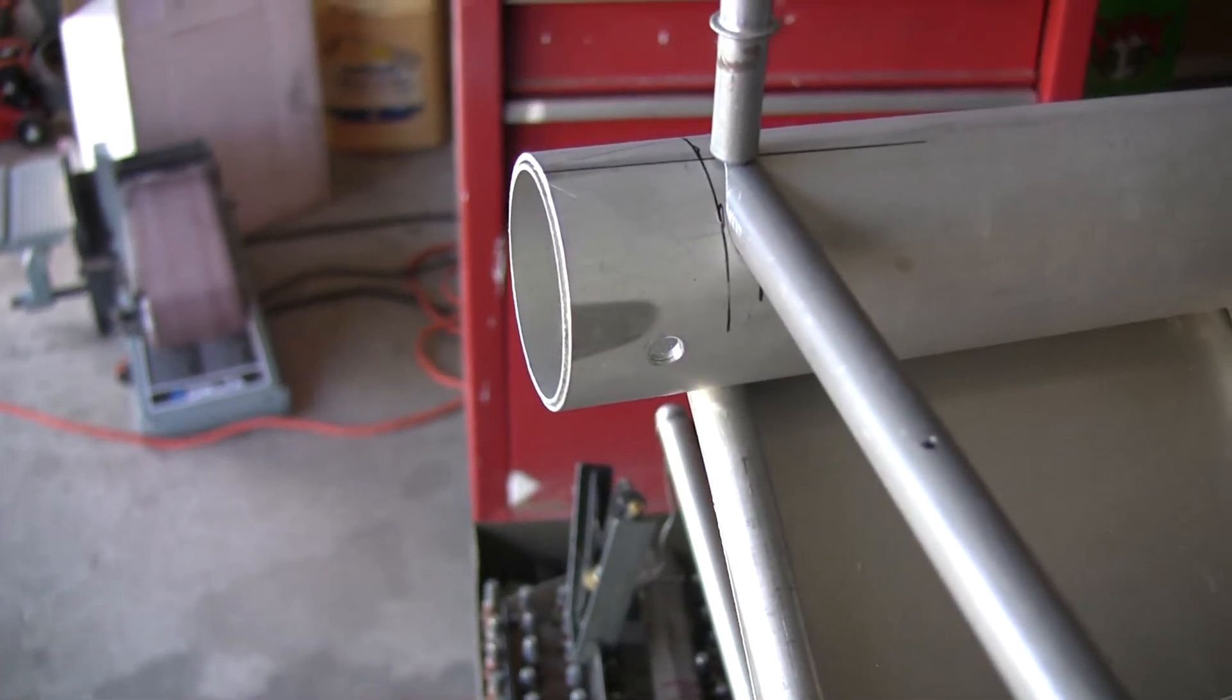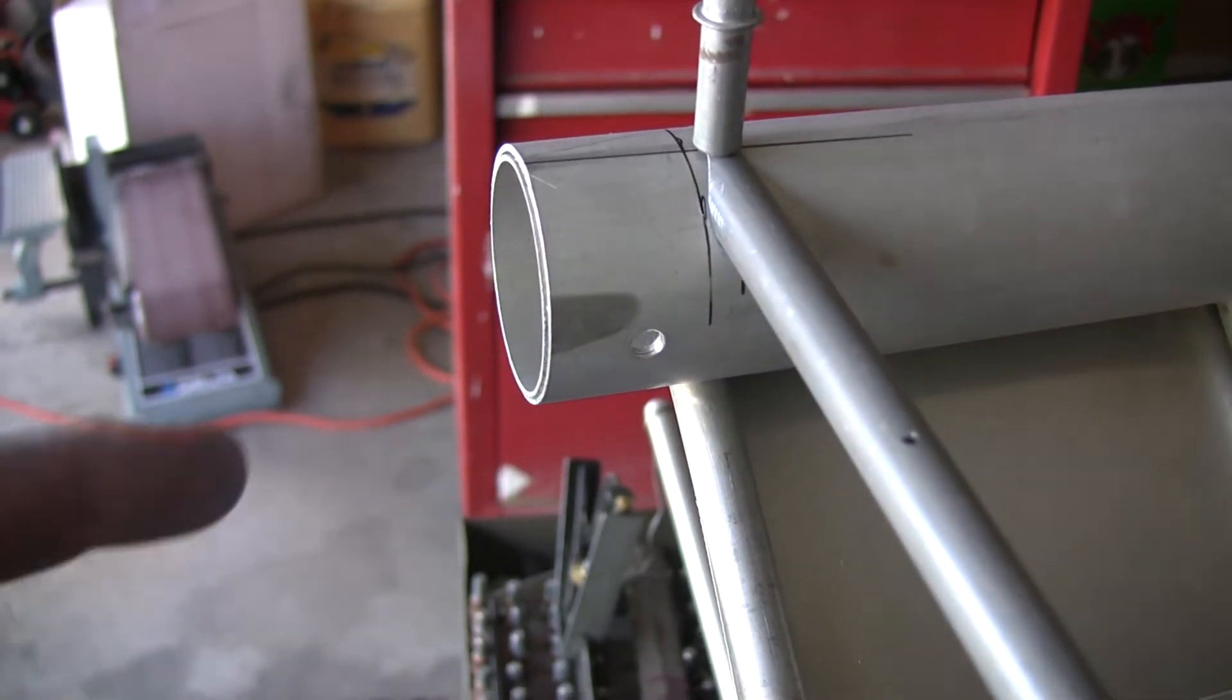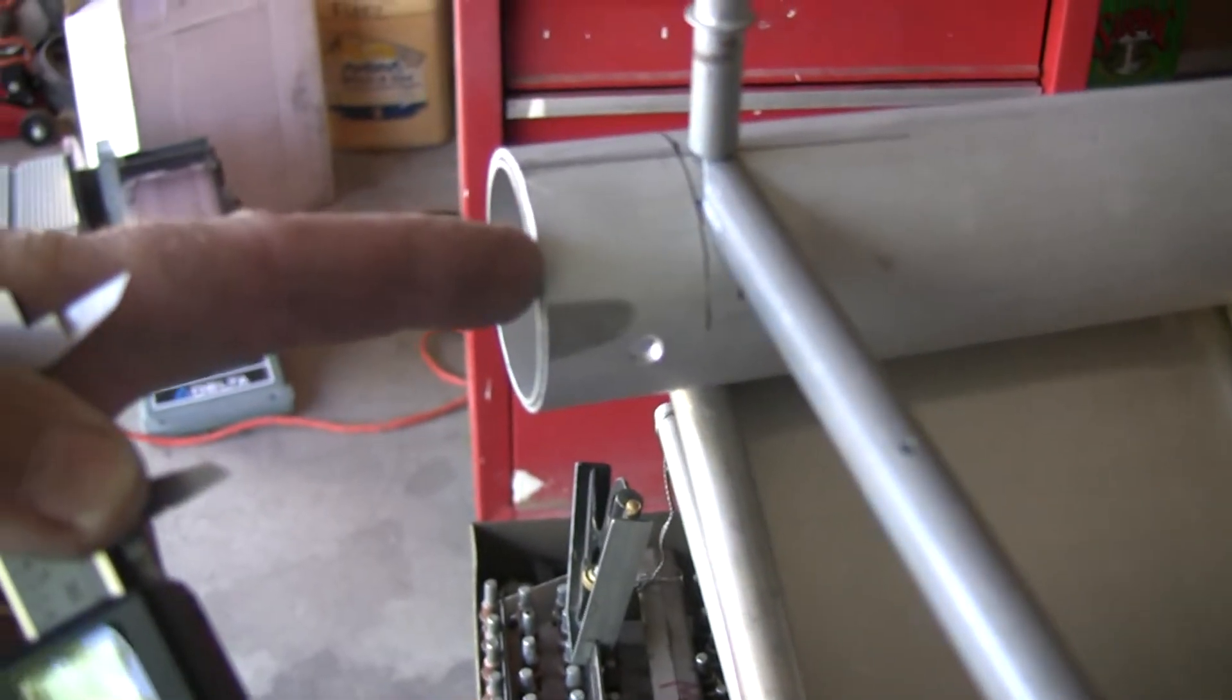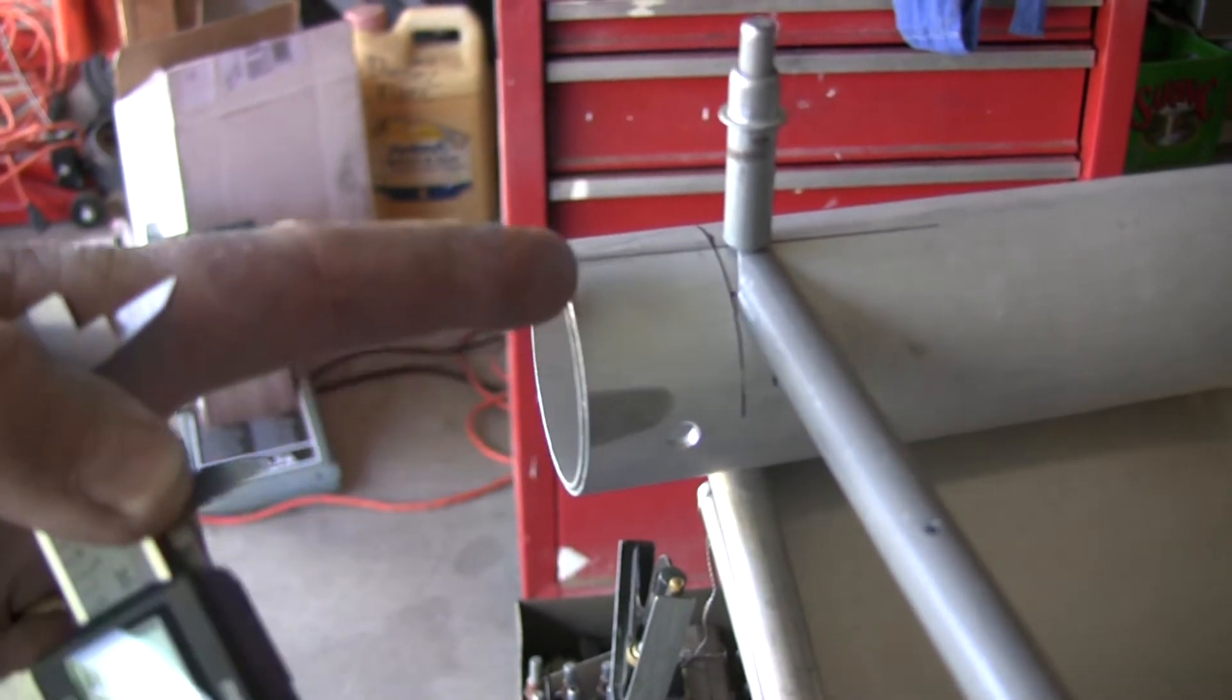One of the first things that you're going to want to do when you start building your wings is mark off from the end of the wing spar here at the root end.